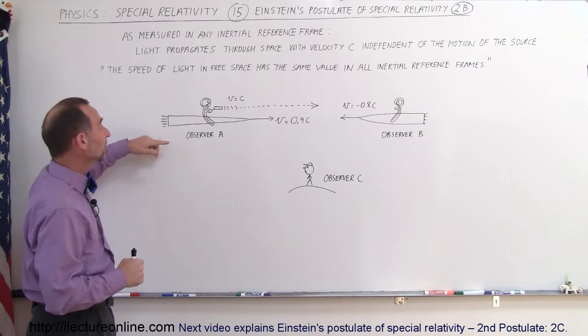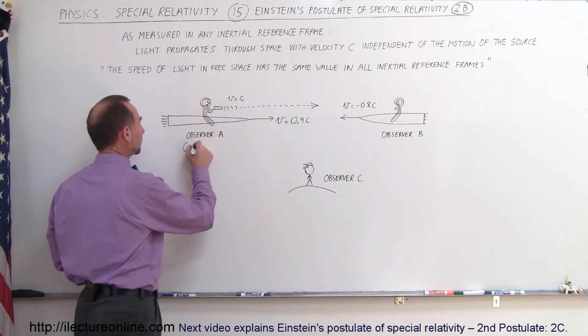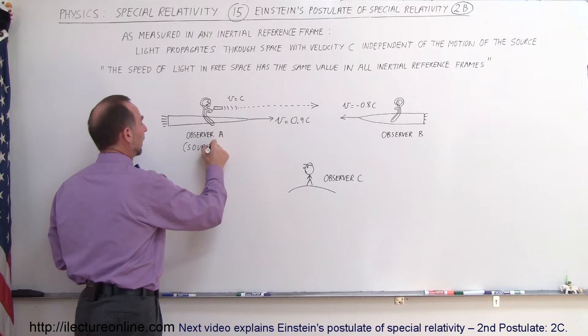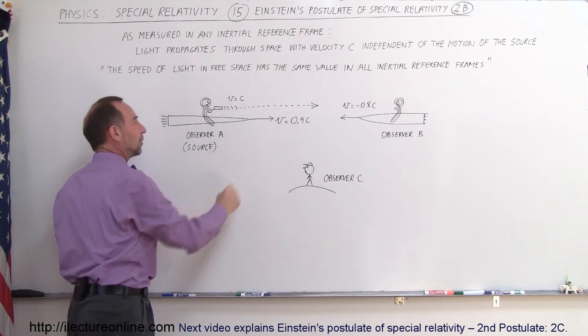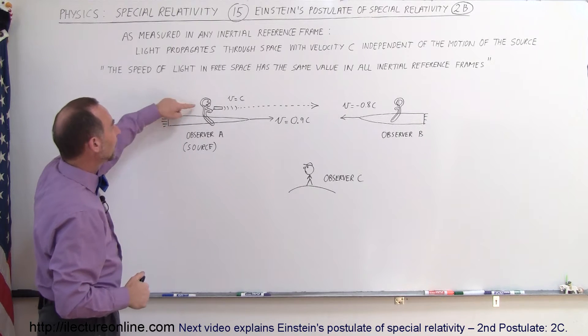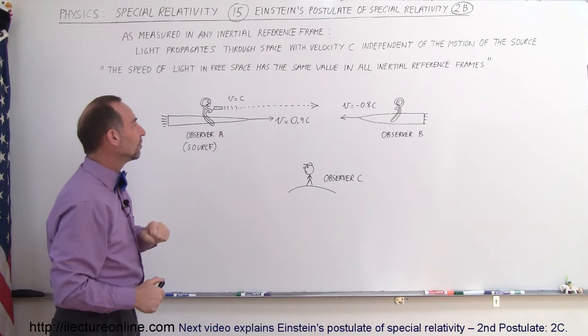As an illustration here, let's say we have observer A. Actually, this is the source of the light. Observer A got bored, got on top of his spaceship, a very fast spaceship by the way, moving at 0.9c. Notice that he has a flashlight with him, and the flashlight is emanating light at the speed of light.